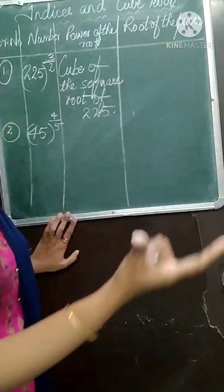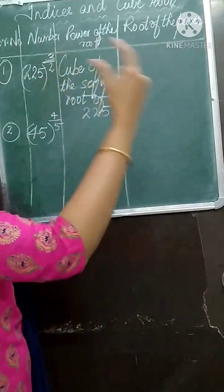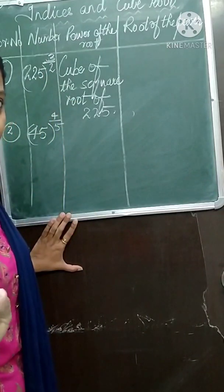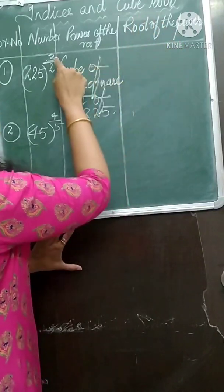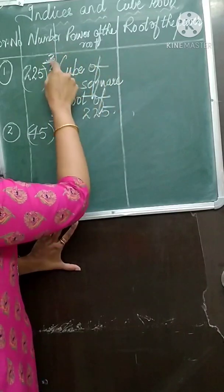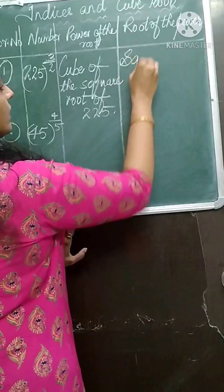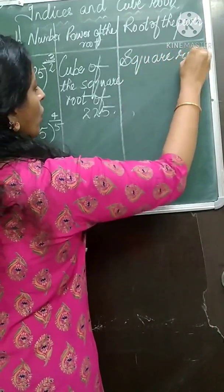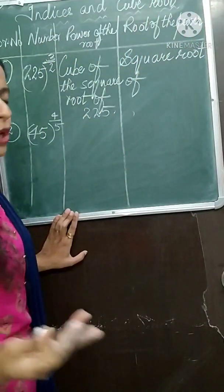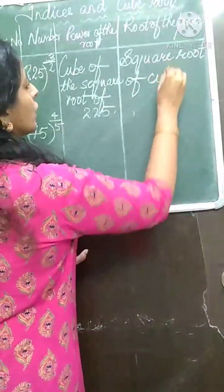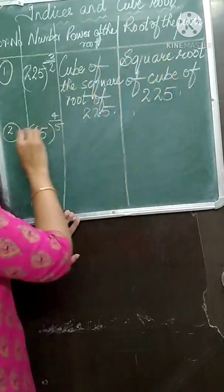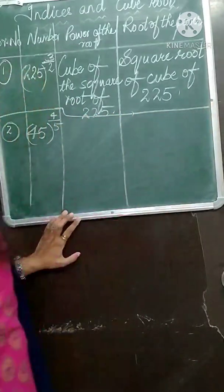Now for 'root of the power': we start with the root. What is in the denominator? 2, which means square. Then comes the power — 3 means cube. So the answer is: square root of cube of 225. First sum completed — you may face a little difficulty here but from the next sums it will become very clear.